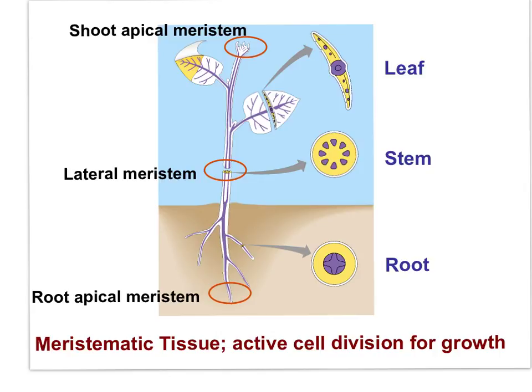Through the first three movies, we've repeatedly looked at cross sections of leaf and stem. Movie Part 5 will examine the cross section of root. But this diagram also displays regions of active cell division and regions of growth. The plant tissue of active cell division and growth is called meristematic tissue. The meristematic tissue at the growing tips of the plant are called apical meristem.